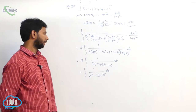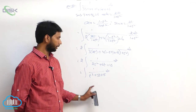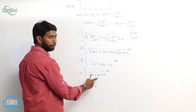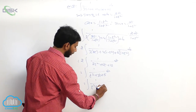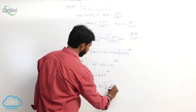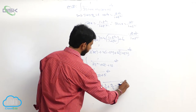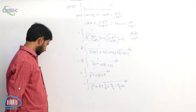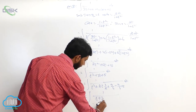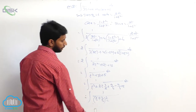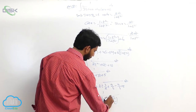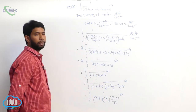Integral of 1 by (t square plus 3t plus 5) dt can be converted into a perfect square by completing the square: integral of 1 by [(t plus 3/2) whole square plus (5 minus 9/4)] dt, which equals integral of 1 by [(t plus 3/2) whole square plus (11/4)] dt, where 11/4 can be written as (root 11 by 2) whole square.